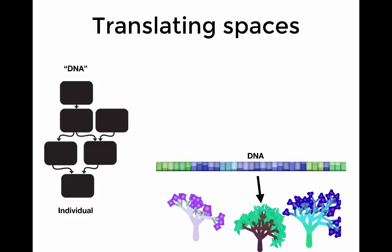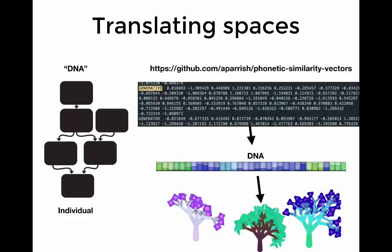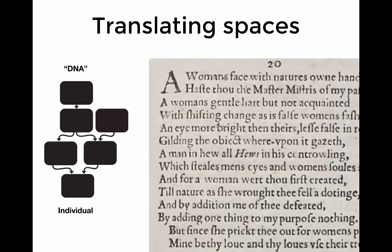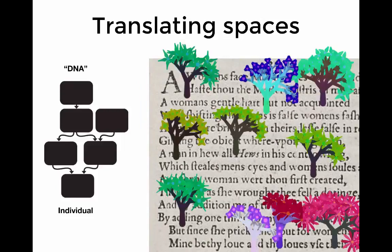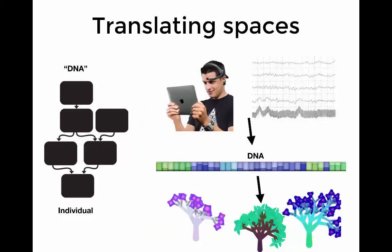We can also talk about how to translate possibility spaces into other possibility spaces. So we know that an array of floats as DNA can be used to create individuals, but where does that DNA come from? It could come from a genetic algorithm, but that's not the only place it could come from. Remember, this is just an array of floats, so it could come from another array of floats, such as Allison Parrish's phonetic similarity vectors, which takes words and maps them to long arrays of floats. What would happen if we took every word in a poem and generated trees based on those?